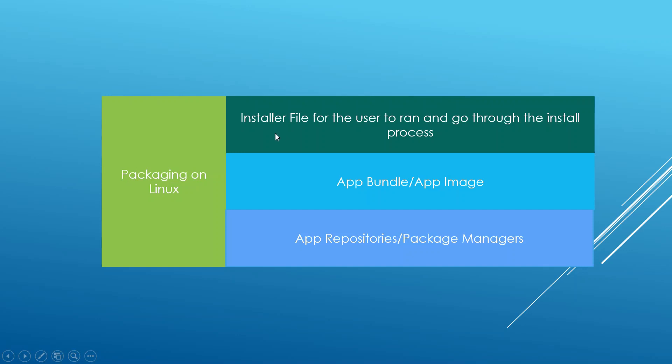For Linux, we have many options. We can use an installer, but we also have the option to use an app bundle — one file you click on to open your application. There is a technology called AppImage that makes this pretty easy. You can also package your application for package managers like apt on Debian/Ubuntu or yum on Fedora.